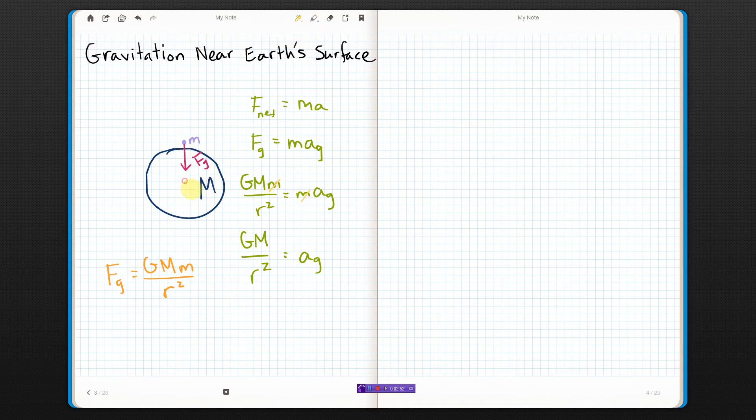If this is the center of the Earth, that distance is just the radius of the Earth if we're near Earth's surface. So if we put in the radius of the Earth, at sea level what we get, the acceleration due to gravity near the Earth's surface ends up being about 9.83 meters per second squared.